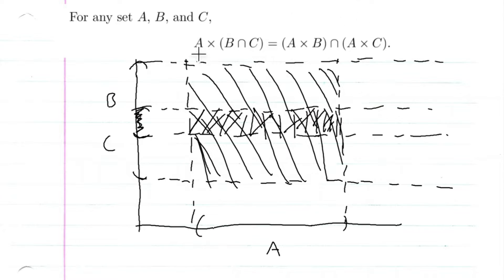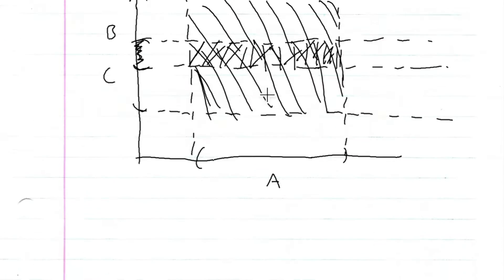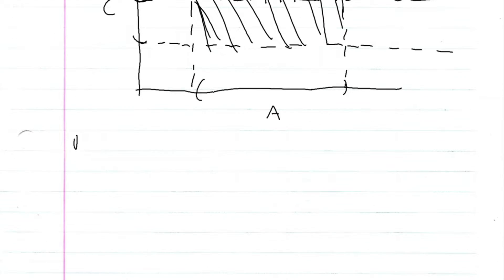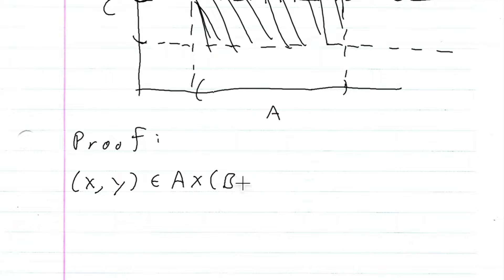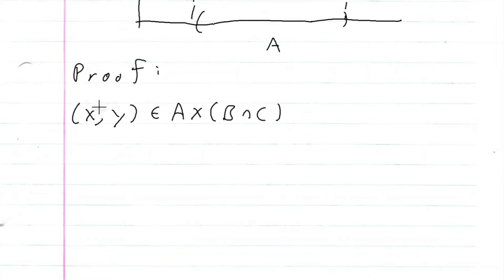So at least geometrically, it appears that A cross (B intersection C) is equal to (A cross B) intersection (A cross C). So let's go ahead and prove it analytically. We're going to let (x, y) be an element of A cross (B intersection C).